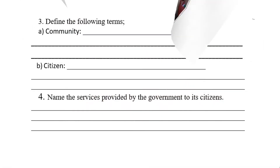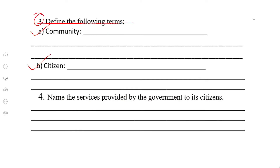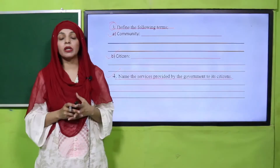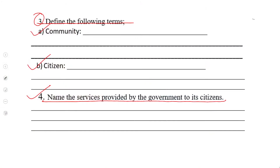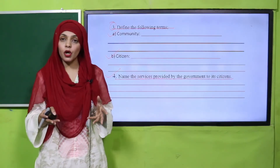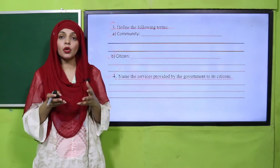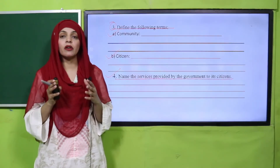Then in question number three, define the following terms: community and citizen. Question number four: name the services provided by the government to its citizens. Pause the video and complete the worksheet, then submit it to your teacher, who will evaluate you and give you marks or grades.